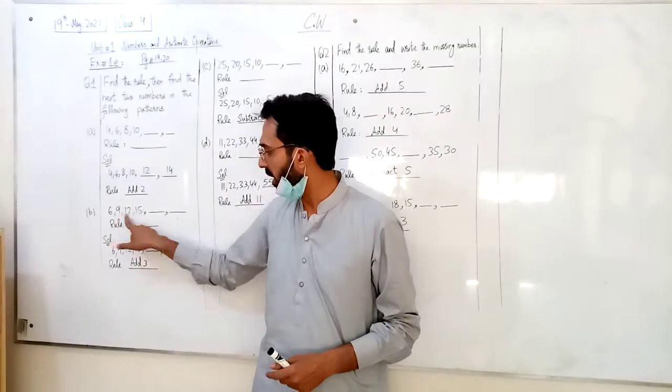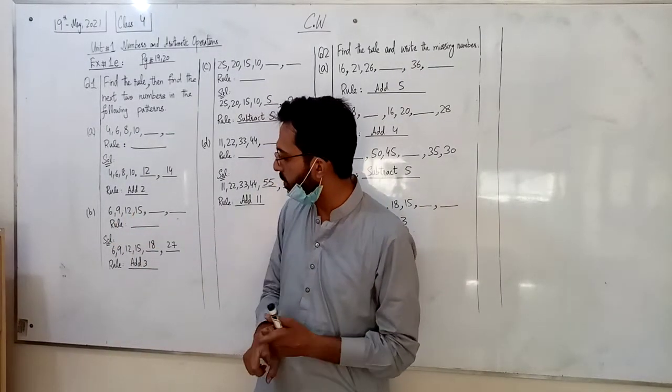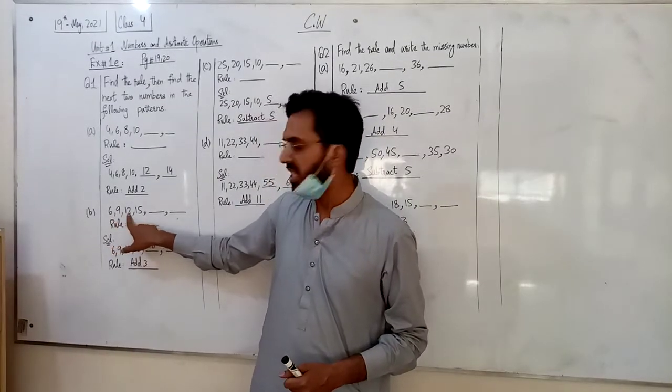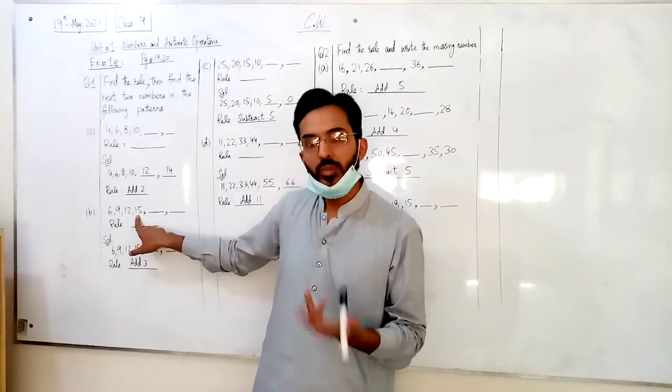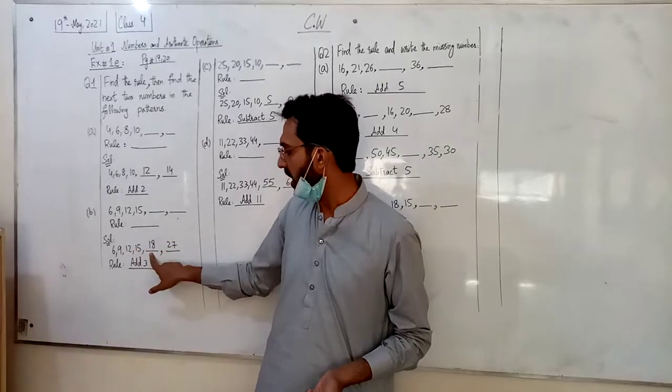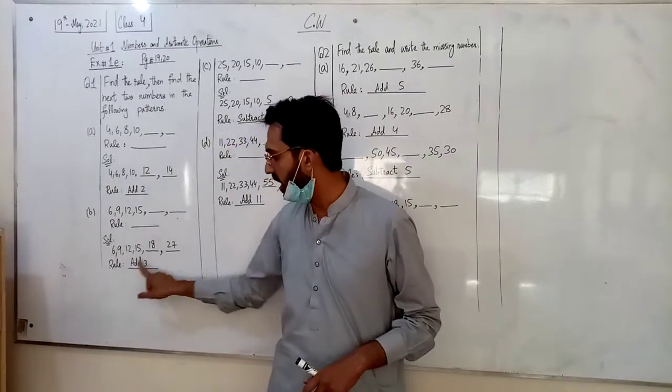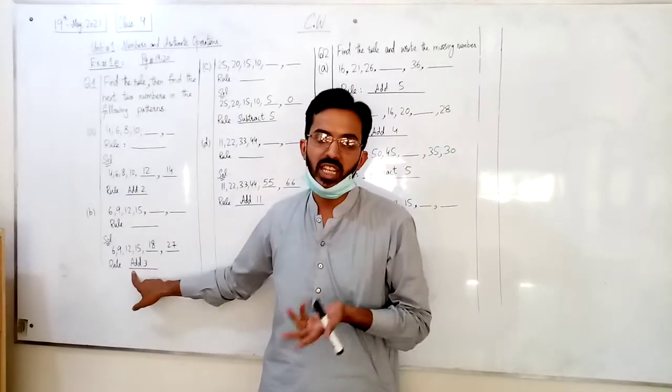So this rule is plus 3. 6 plus 3 is 9, 9 plus 3 is 12, 12 plus 3 is 15, 15 plus 3 is 18, 18 plus 3 is 21. What rule is that? 3 add. The question is so simple.